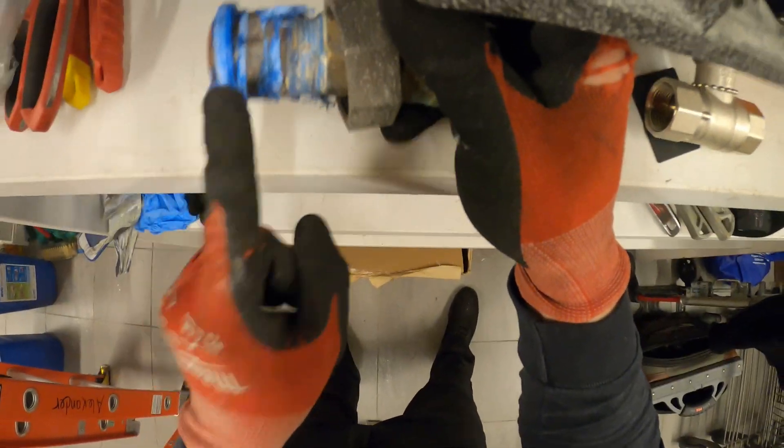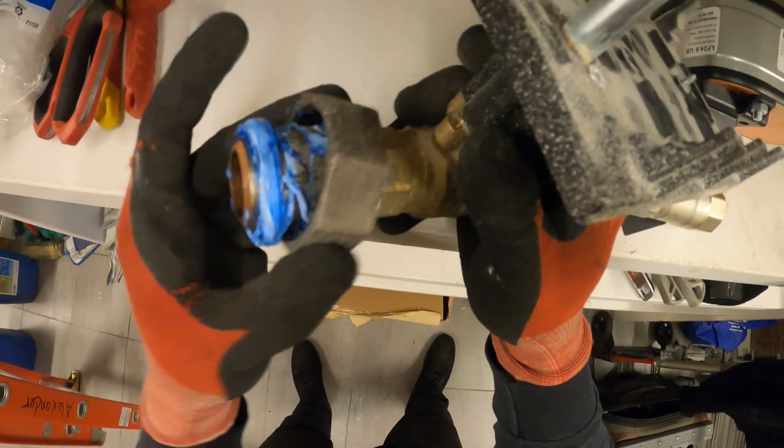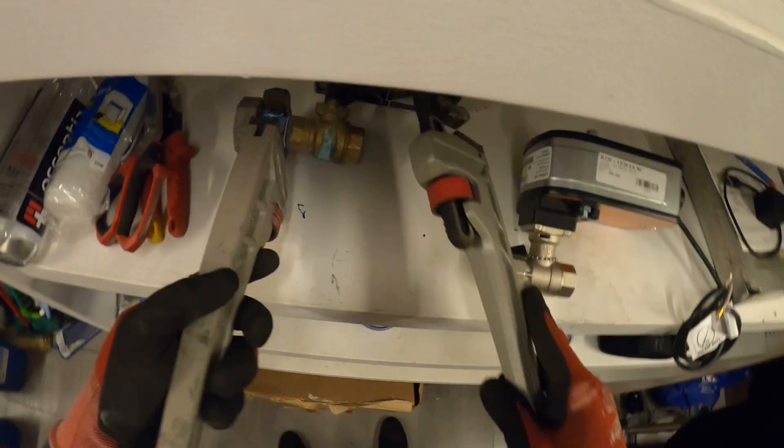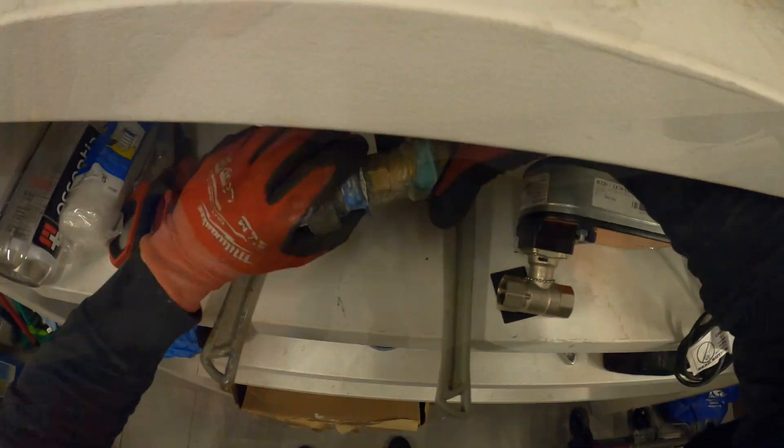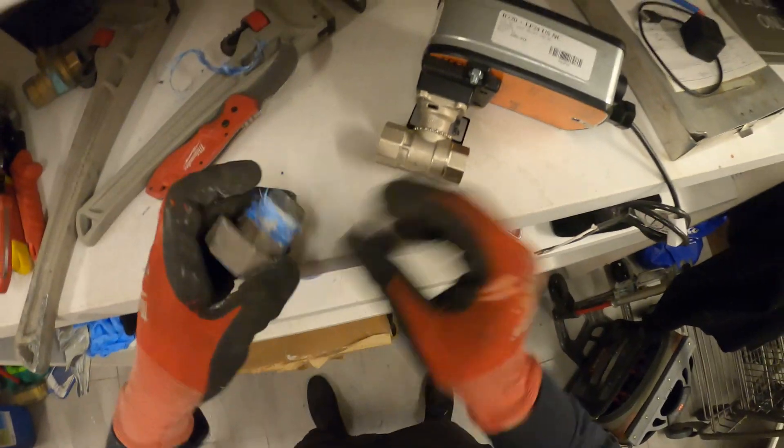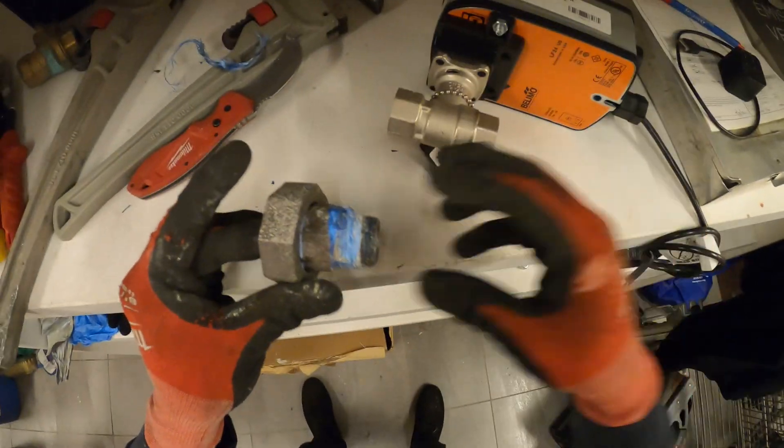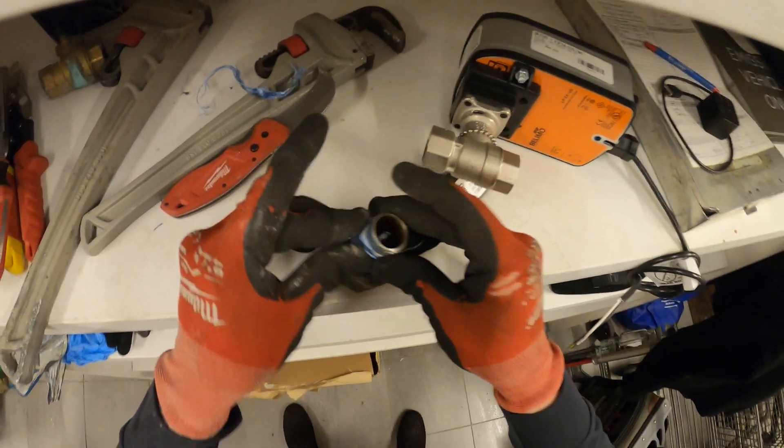It looks like previously they had an issue with this union leaking because there's Teflon tape on the union and you really don't need that. So just something to be cautious about. We're going to reduce some of this Teflon. And we're basically just going to attach this now into this piece and just redo everything the opposite way.